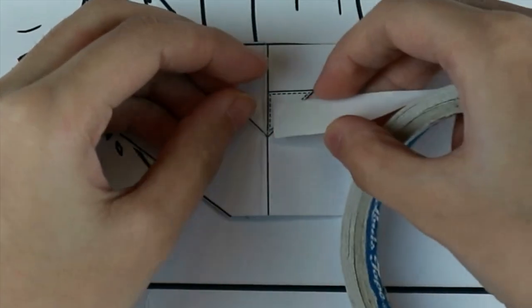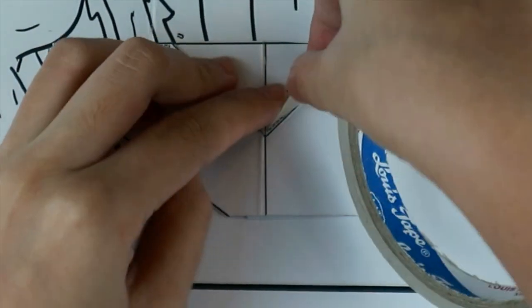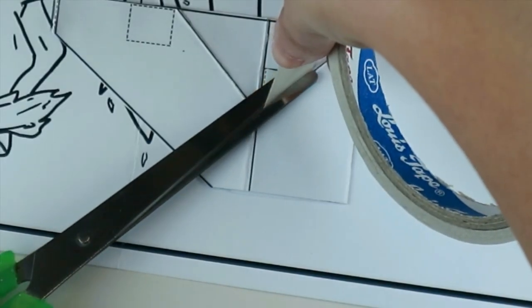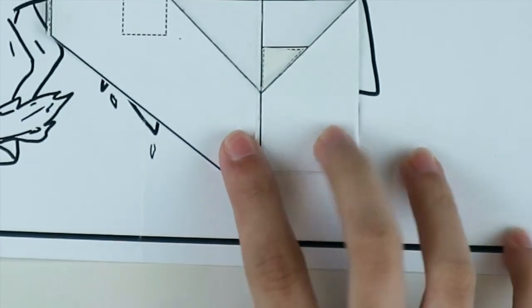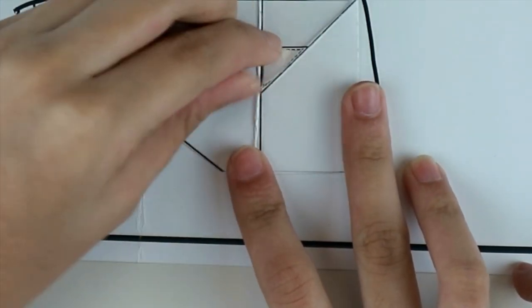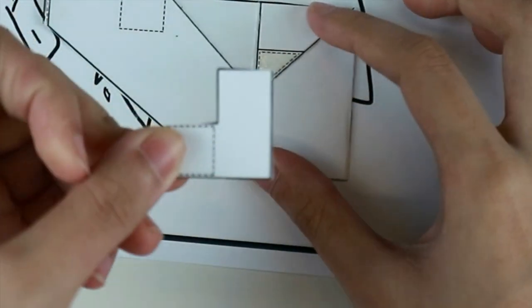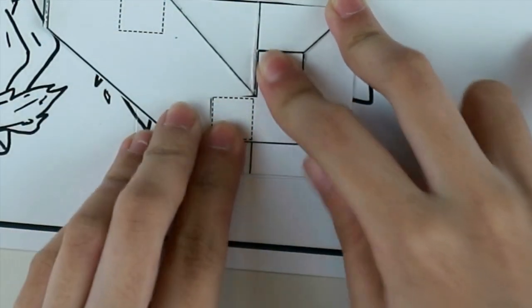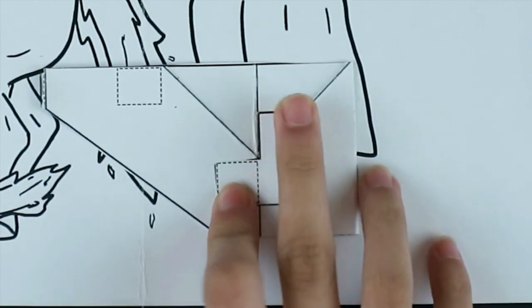Attach double-sided tape to the tiny triangle with broken lines in it. Remove the double-sided tape film and now attach the L-shaped cutout to the right side of the inverted triangle. The tip of the inverted triangle should meet the inner corner of the L-cutout.